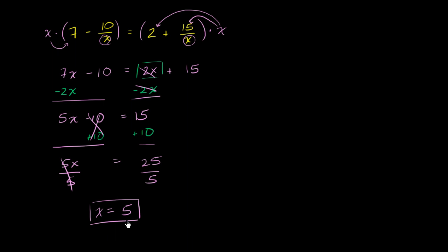Now let's verify that this actually worked. So let's go back to the original equation. We have 7 minus 10 over 5. This needs to be equal to, I'm just taking our 5 and substituting it back here. This needs to be equal to 2 plus 15 over 5. So this is 7 minus 10 over 5,